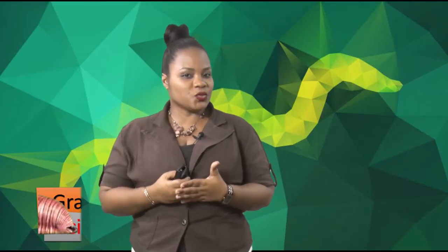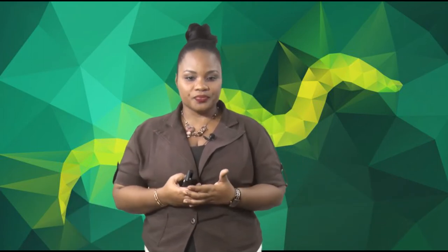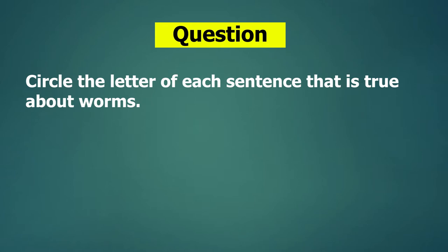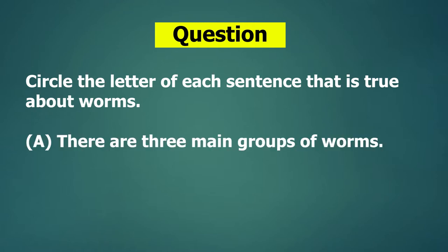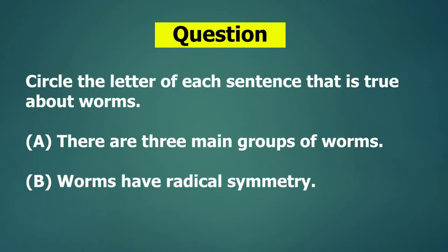First question: circle the letter next to each sentence that is true about worms. A — there are three main groups of worms. If that is true, we circle A. B — worms have radical symmetry.